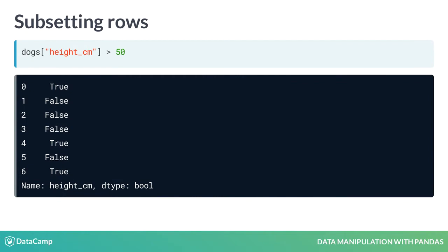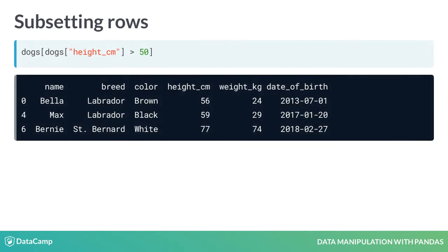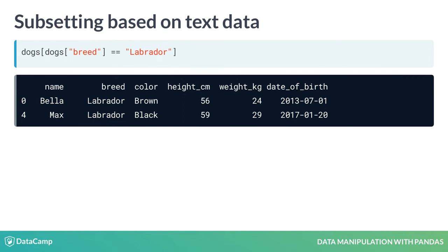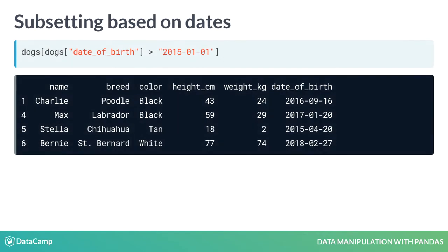There are lots of different ways to subset rows. The most common way is by creating a logical condition to filter against. For example, let's find all the dogs whose height is greater than 50cm. Now we have a true or false value for every row. We can use the logical condition inside of square brackets to subset the rows we're interested in, to get all of the dogs taller than 50cm. We can also subset rows based on text data, using the double equal sign to filter the dogs that are Labradors. We can also subset based on dates — here we filter all the dogs born before 2015. Notice that the dates are in quotes and are written as year, then month, then day. This is the international standard date format.